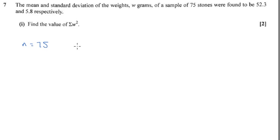It says that the mean is 52.3, and they've given us the standard deviation. That's important to note, that that's the standard deviation, not the variance. We might want to write down the variance as well, which will be 5.8 squared, which is 33.64.